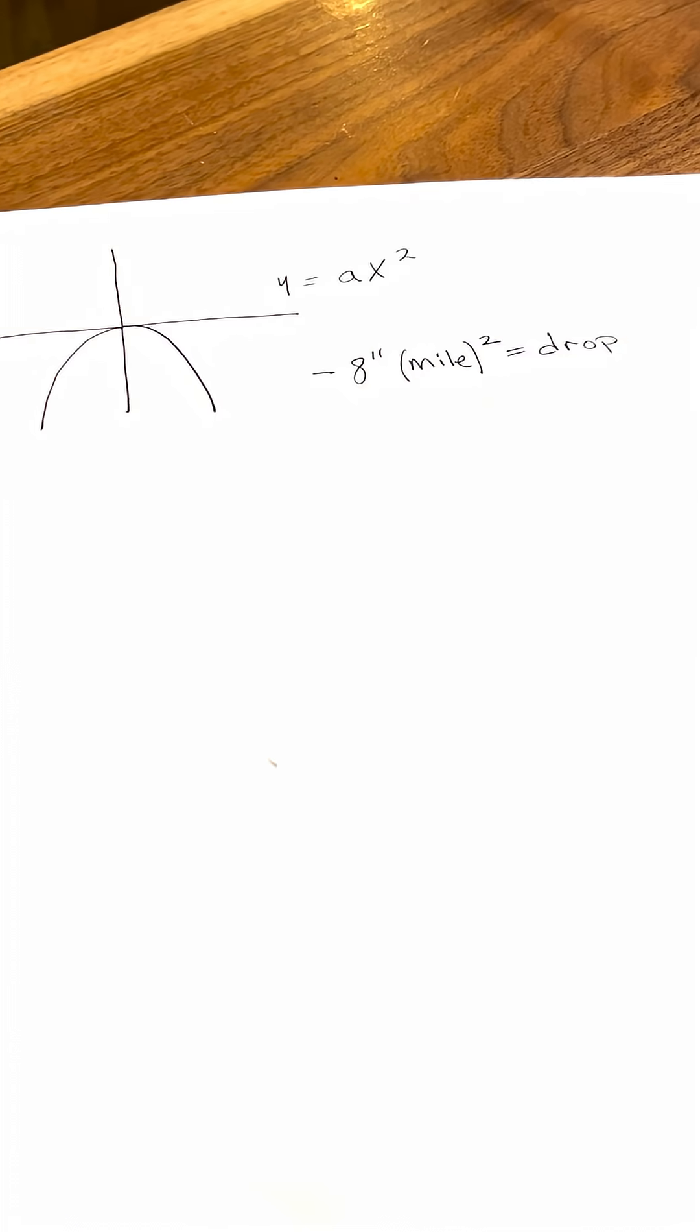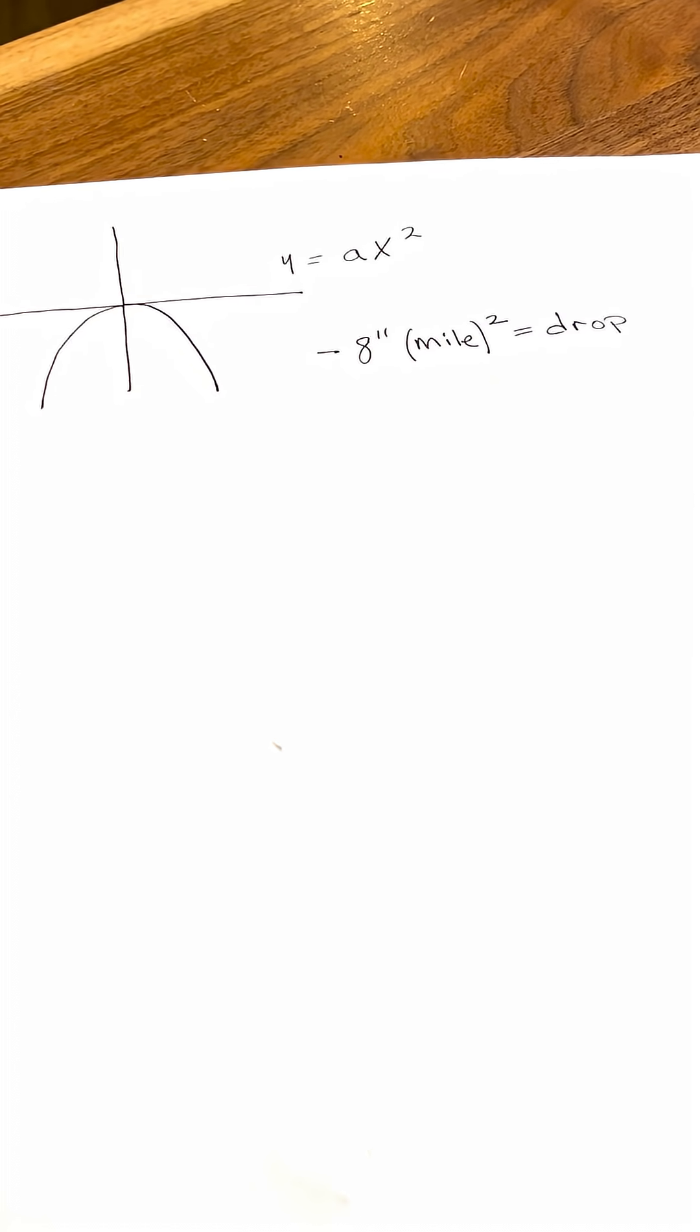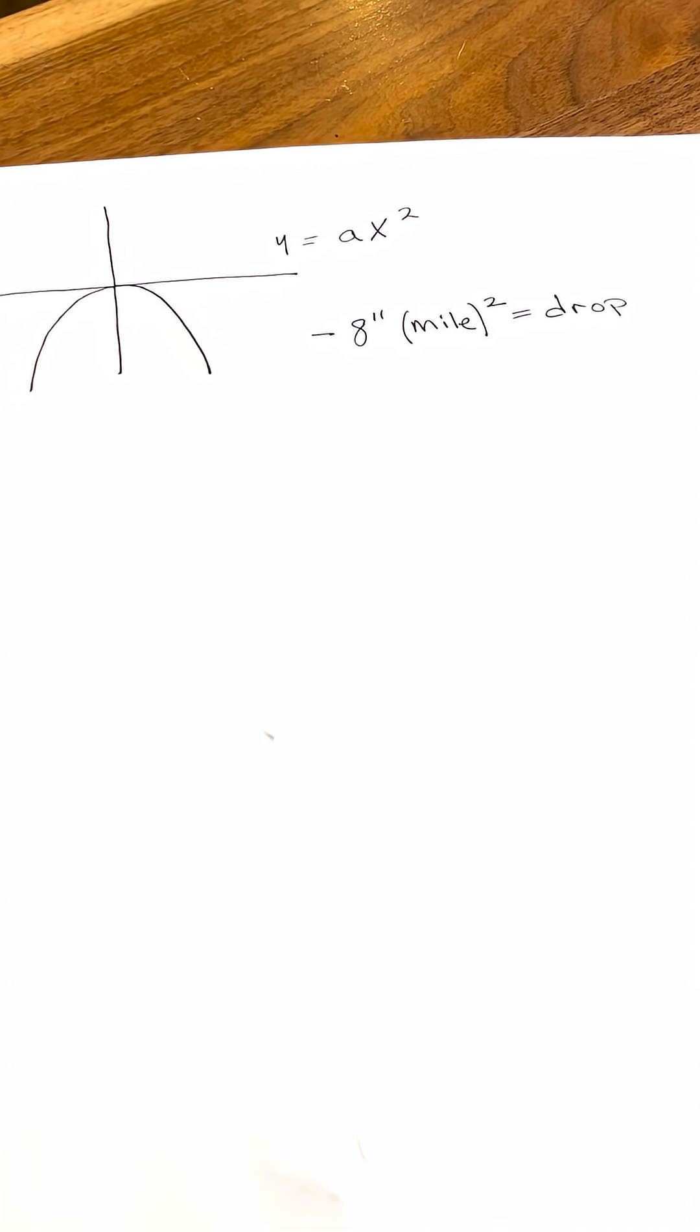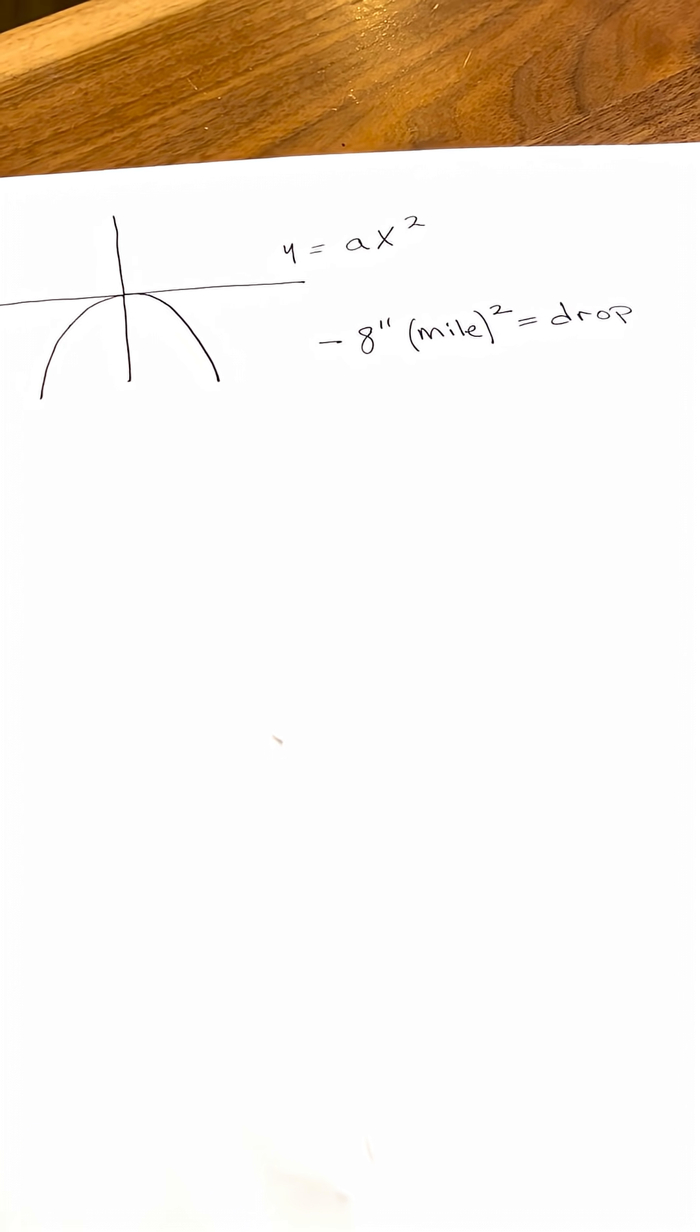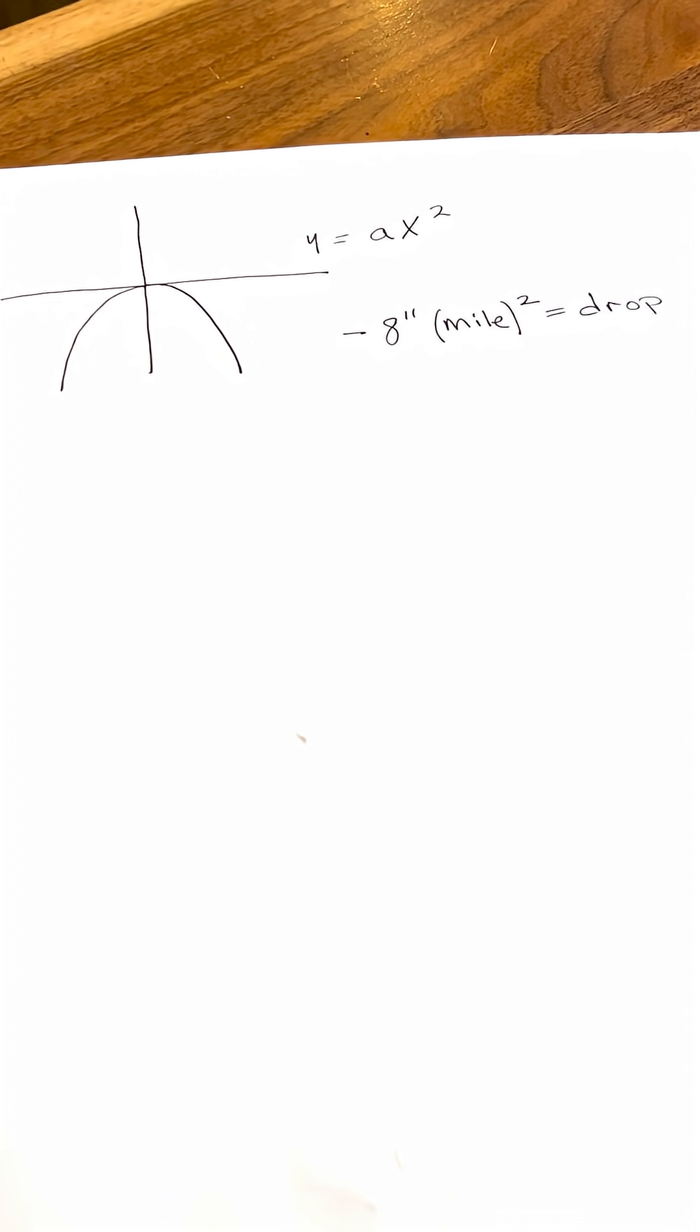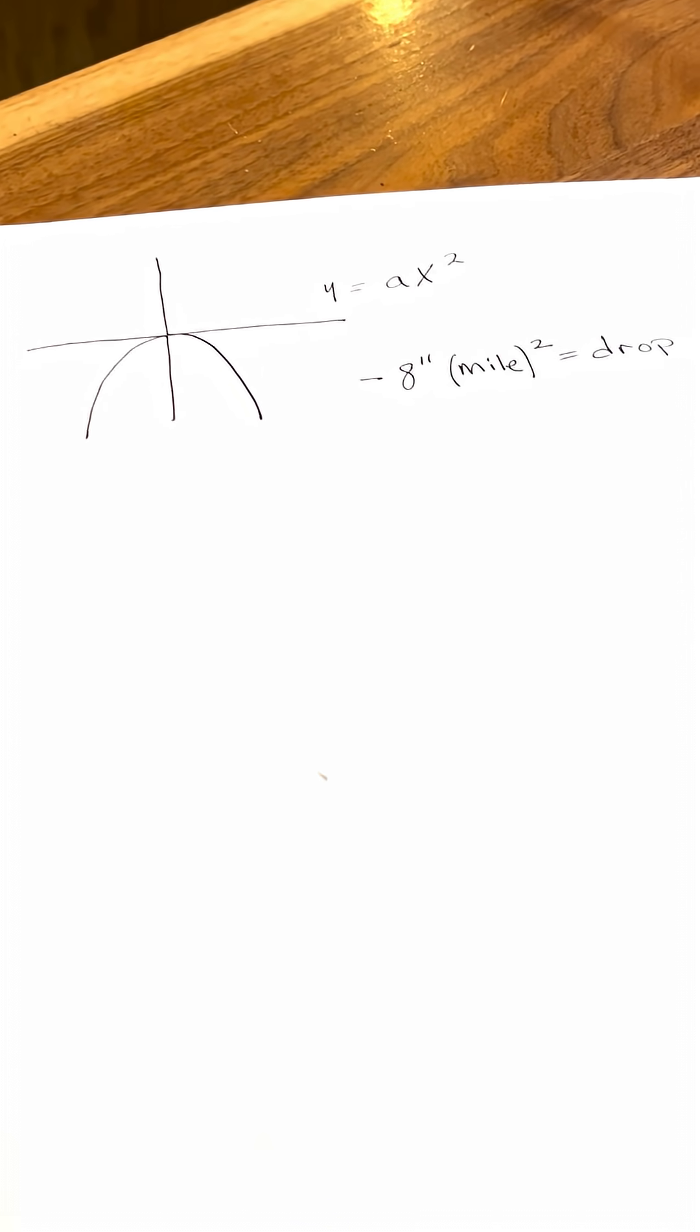Let's go ahead and grab a piece of paper and do it. Now the equation 8 inches per mile squared describes a hyperbola or a parabolic arch, and the formula for that is y equals a, which is some constant of proportionality, times x squared. Now because this curve opens downward we have to put a negative in front of it because we're talking about a drop.